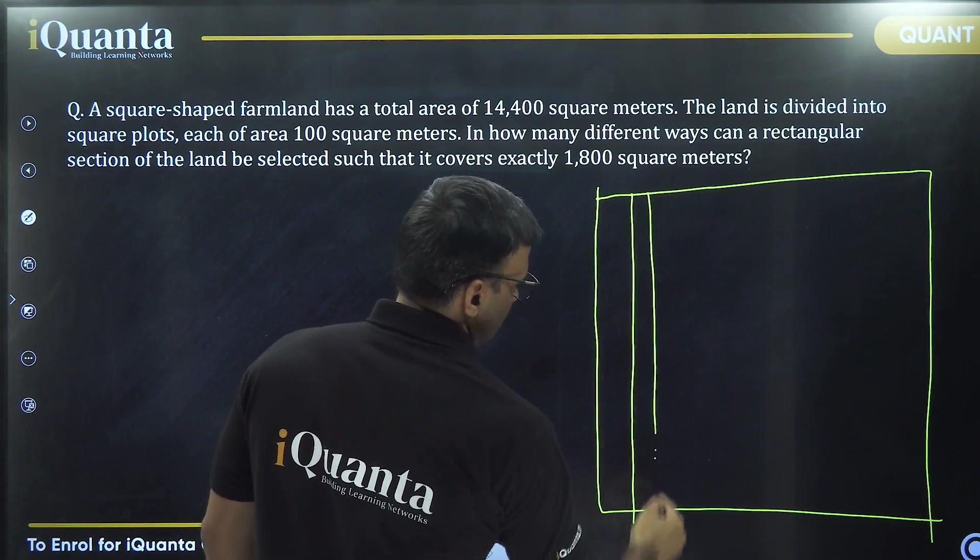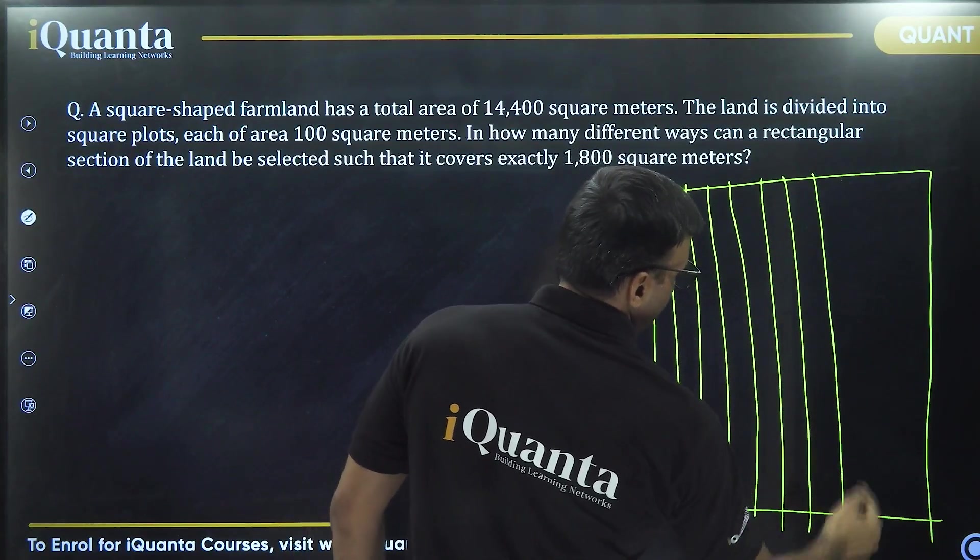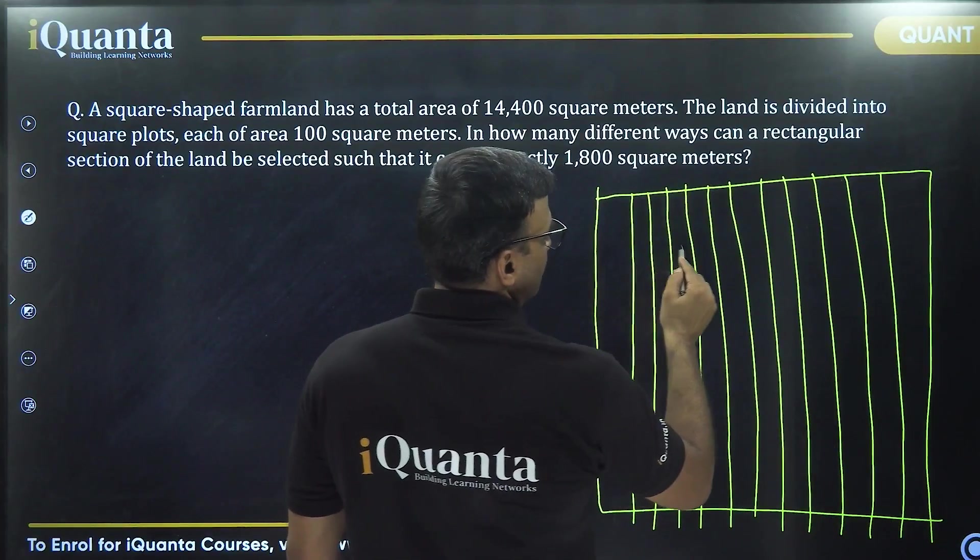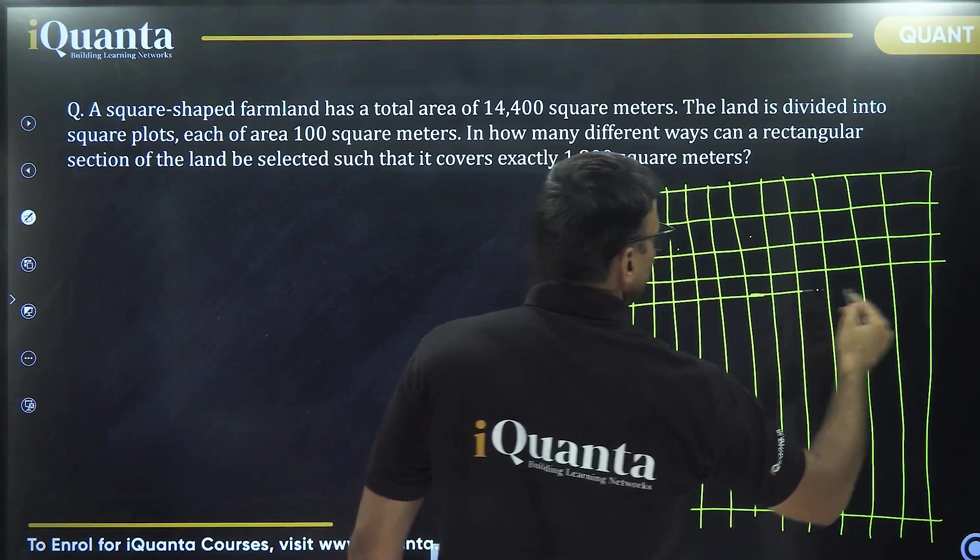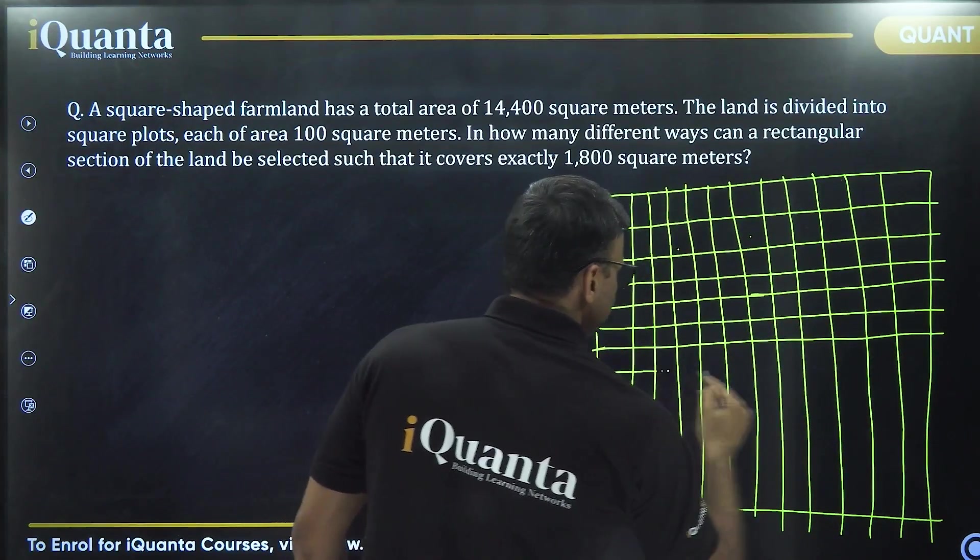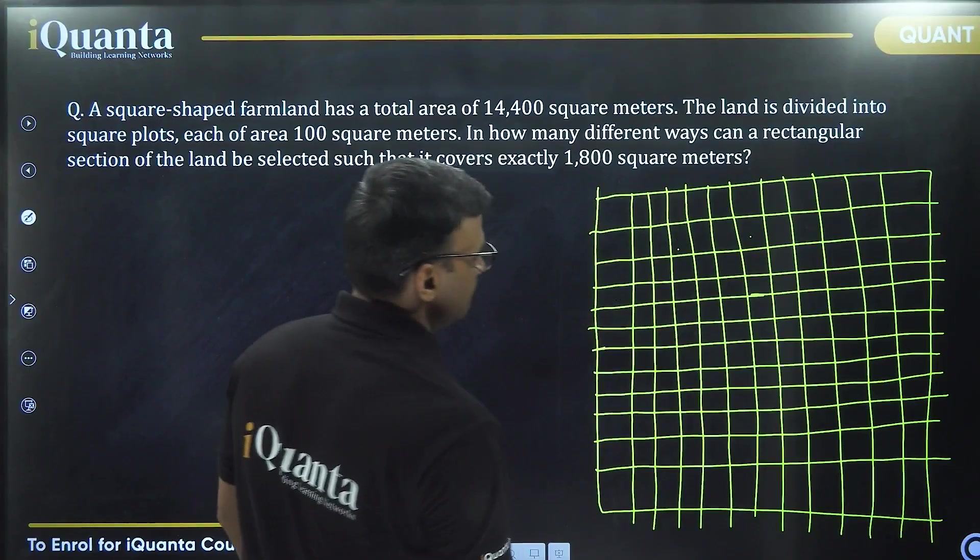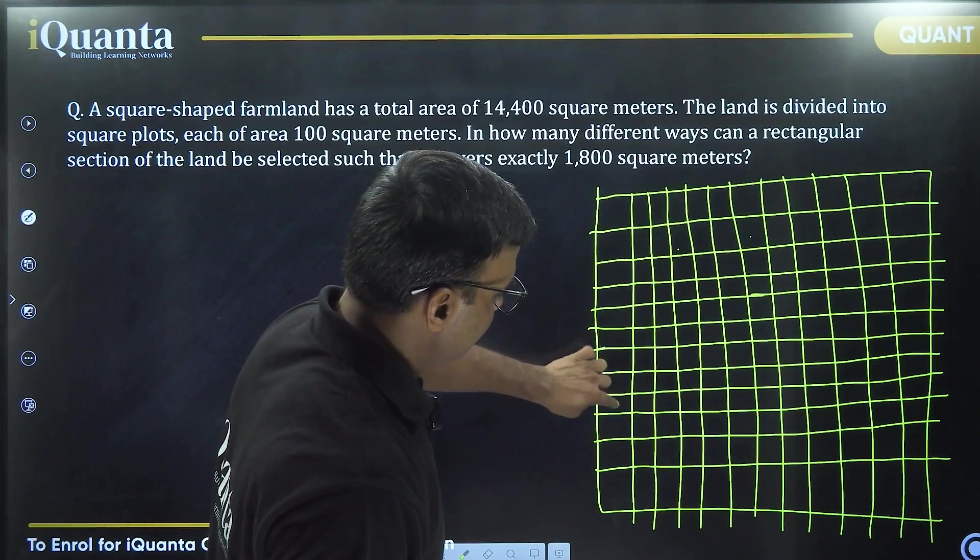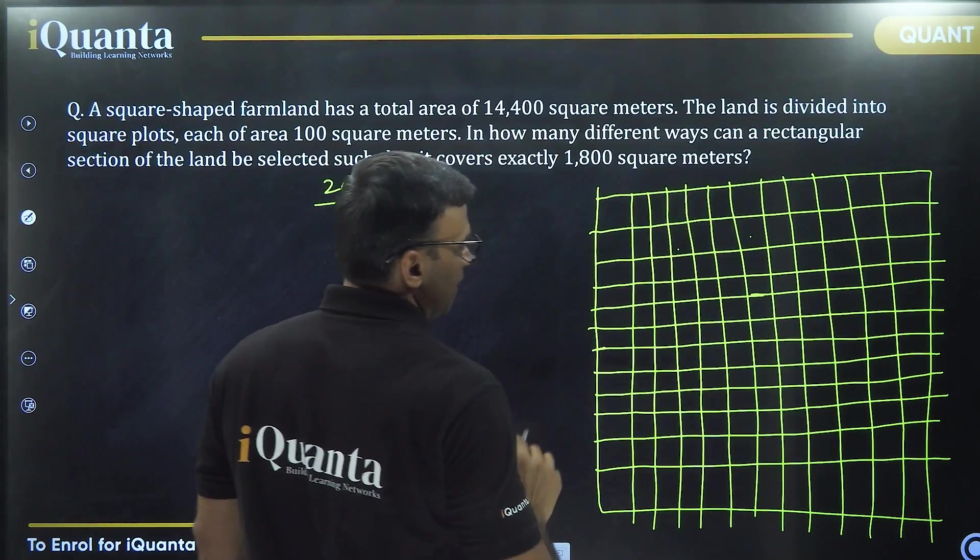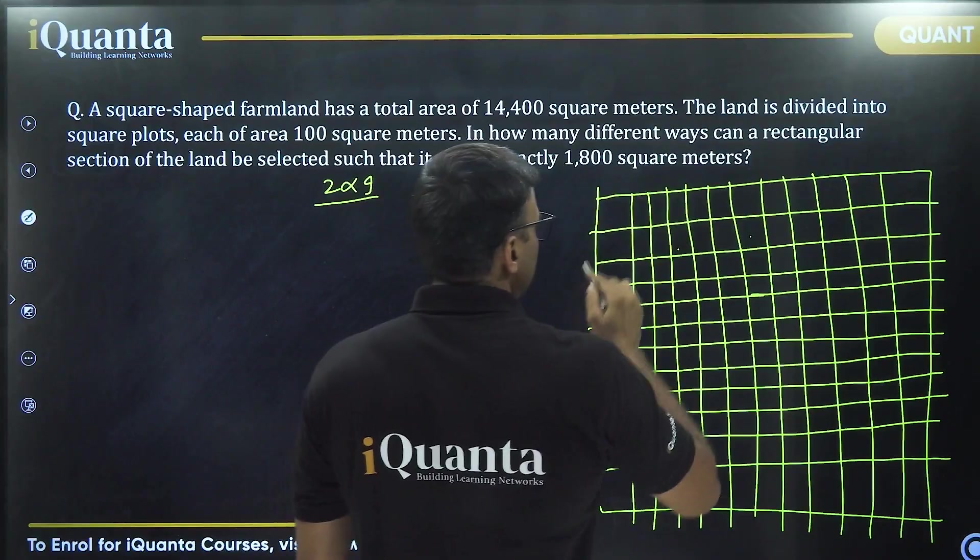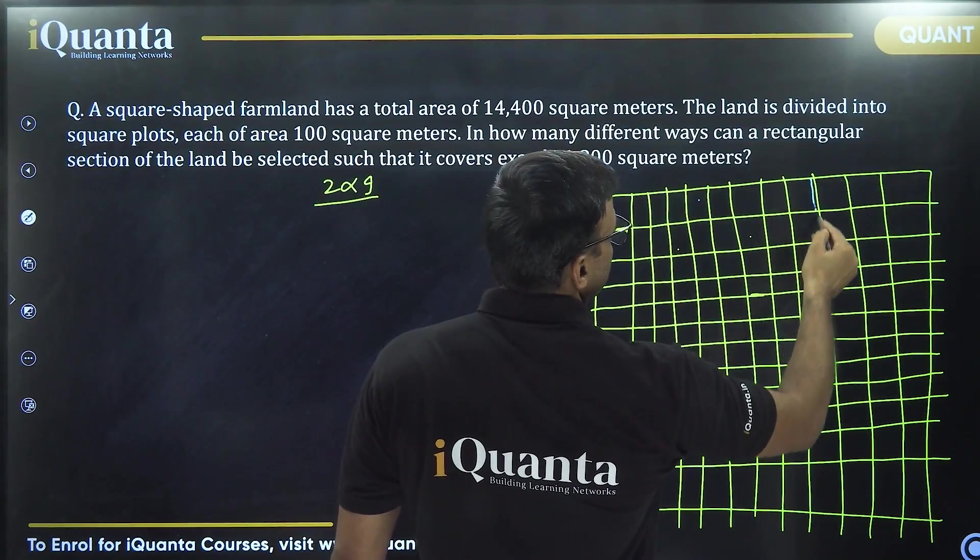I draw a 12 by 12 grid, numbering each row and column from 1 to 12. What kind of plot do we need? We need structure 2 by 9. I change to blue color. I take these 2 rows and I take 1, 2, 3, 4, 5, 6, 7, 8, 9 up to this one. This blue outline rectangular plot will be of area 1800 square meters.